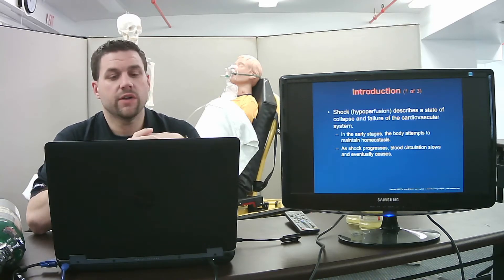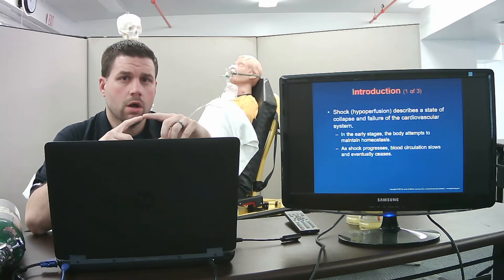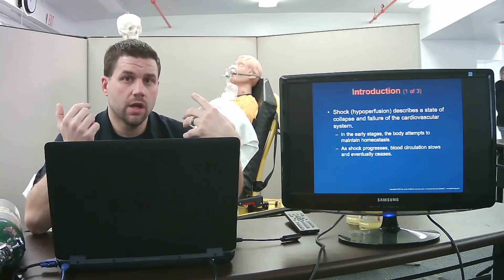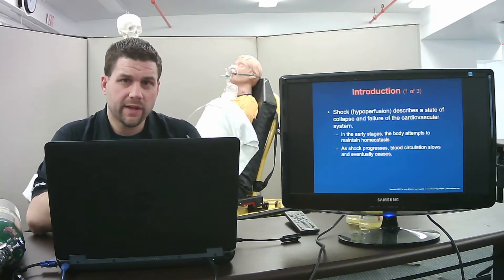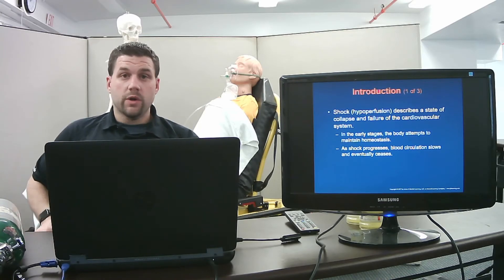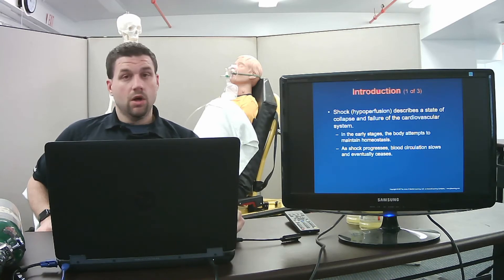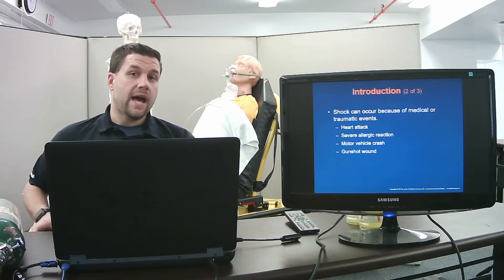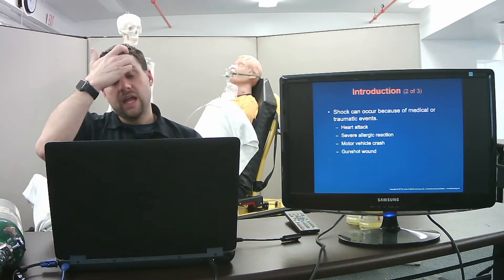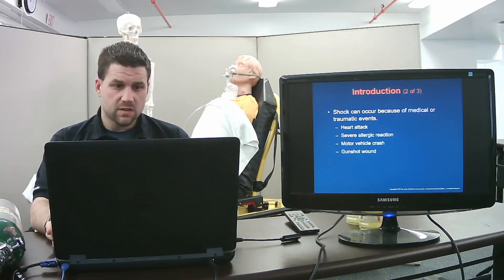Our pump is the heart, our container is the blood vessels, and our fluid is the blood. In the early stages, the body attempts to maintain homeostasis. As shock progresses, blood circulation slows and eventually ceases. We can see this in both medical and traumatic events — heart attacks, anaphylactic reactions, motor vehicle crashes, and gunshot wounds. We can treat an anaphylactic reaction with an epi pen, and major bleeding with a tourniquet.